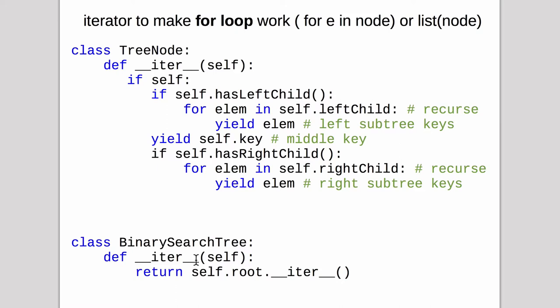And what it has to do is it has to yield things. So the iterator for the binary tree just calls the iterator on the root.